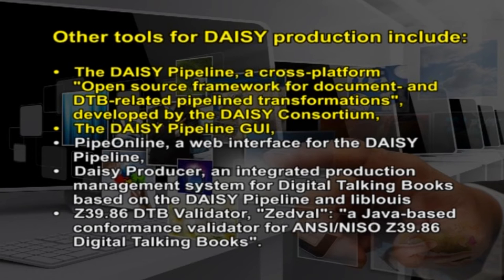The DAISY Pipeline GUI, Pipe Online, a web interface for the DAISY Pipeline; DAISY Producer, an integrated production management system for digital talking books based on the DAISY Pipeline and LibLuis; and Z3986 DTB Validator called ZDWAL, a Java-based conformance validator for the ANSI NISO Z39.86 digital talking book standard.